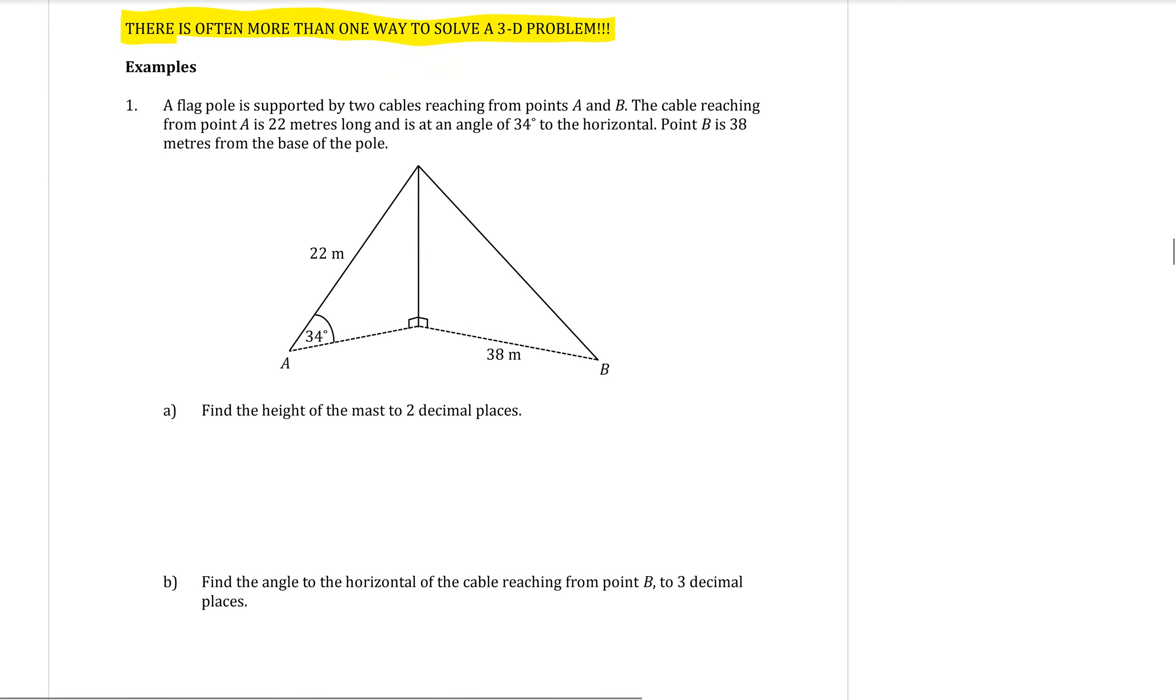So we have one question down here to look at. It says a flagpole is supported by two cables reaching from points A and B. The cable reaching from point A is 22 meters long. So here's A and here's the cable 22 meters long and is at an angle of 34 degrees to the horizontal. Point B is 38 meters from the base of the pole but we don't know an angle for that one. So all the information has been put onto this diagram for us.